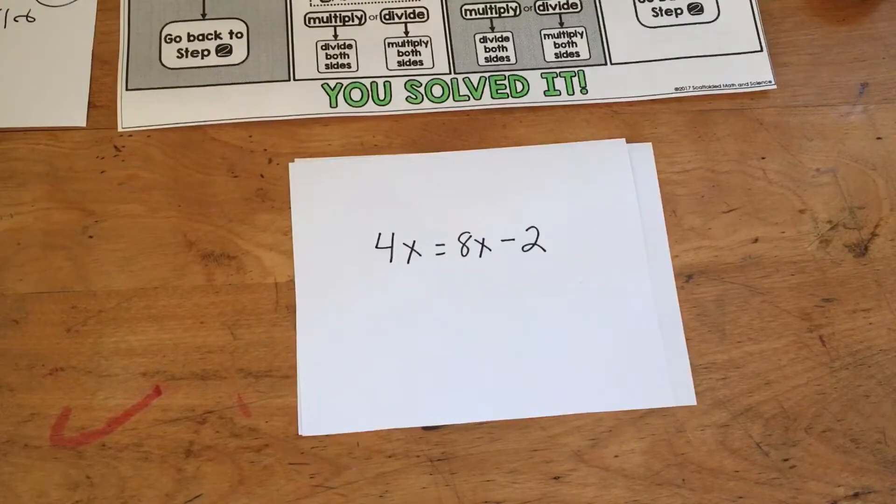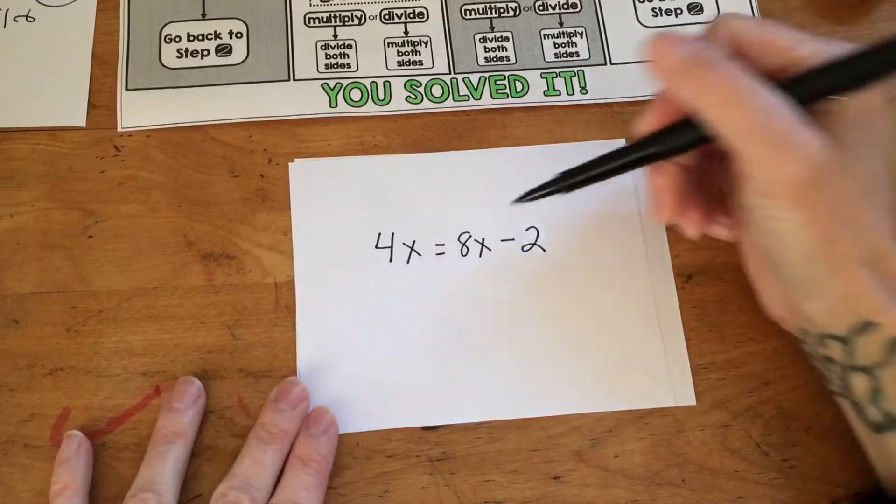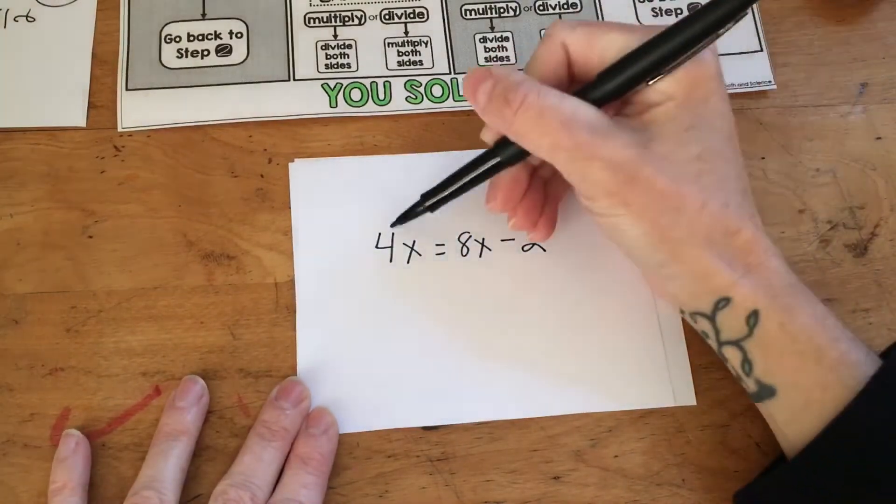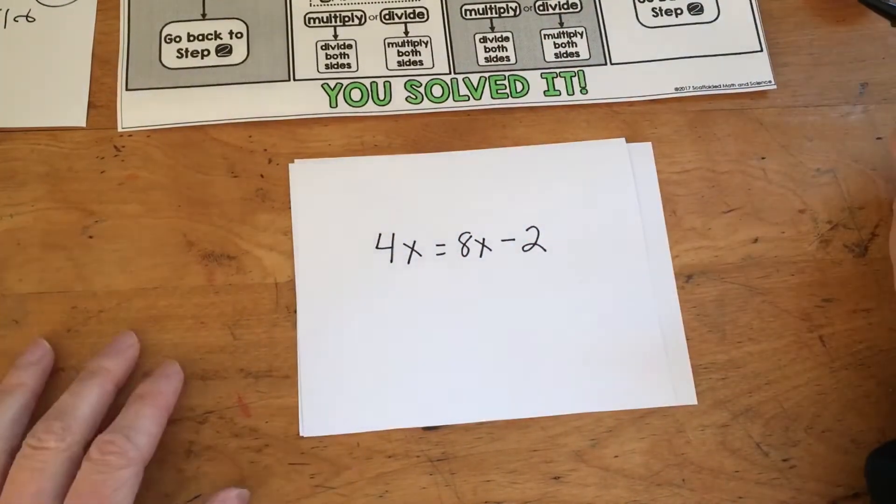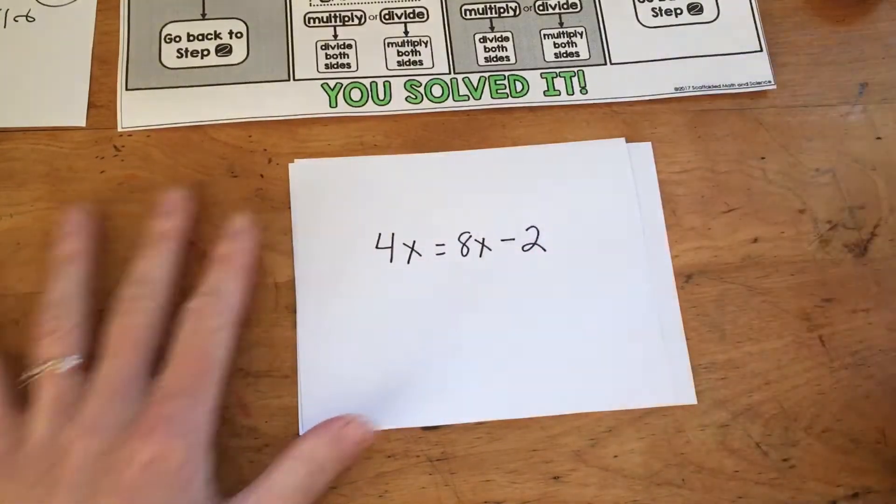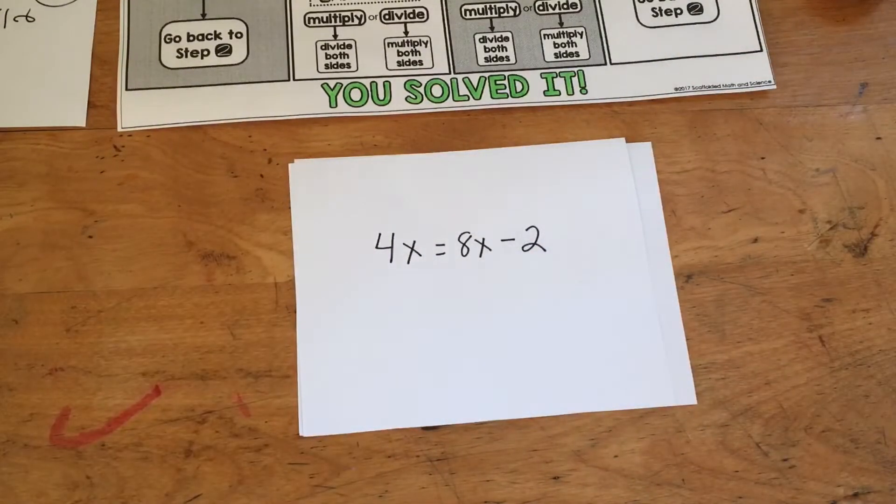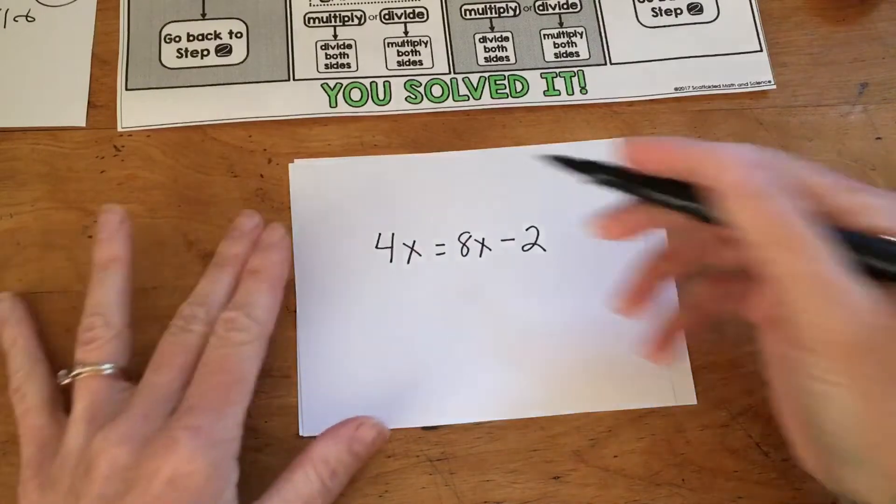So I ask them again, which side has two terms? They'll say the right side. I ask which of these terms is the like term to 4x? And they'll know that the 8x is. I said, is it positive or negative? They say positive. And then I say we'll need to subtract it.